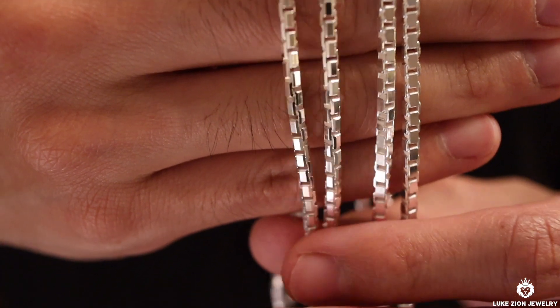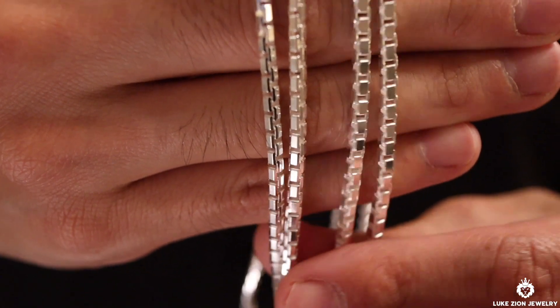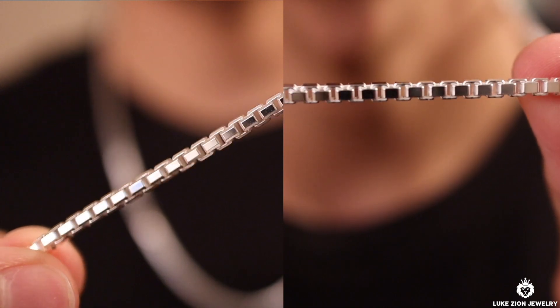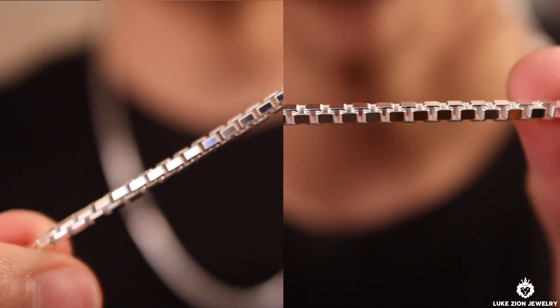So another pointer is the four-sided diamond cut box chain is more of a box design. That one's kind of more box. It's going to roll because it kind of has that little oval on the sides there, but it doesn't compare to the eight-sided.